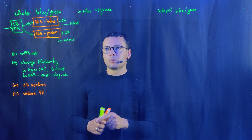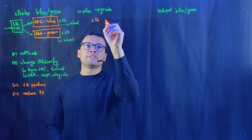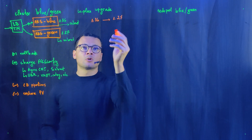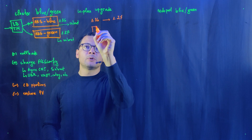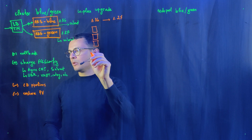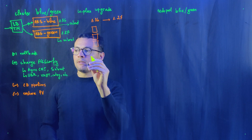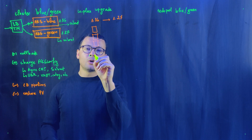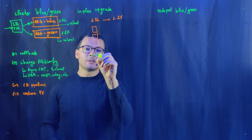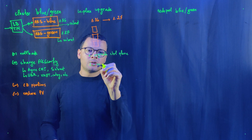Now let's move to the second approach, which is the in-place upgrade. Let's say I want to move from version 1.26 to 1.27. I would have my node pool running multiple VMs at 1.26 — say three VMs in that node pool. With the in-place upgrade, the first step is to upgrade the control plane before upgrading the node pools, and then we go to upgrade the node pools.